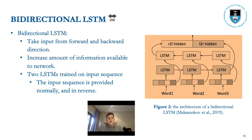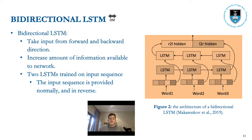The idea of a bidirectional recurrent neural network, or LSTM, involves duplicating the first recurrent layer in the network so that there are now two layers side by side, then providing the input sequence as-is to the first layer and providing a reverse copy of the input sequence to the second. The architecture of a bidirectional LSTM can be seen on the right of the slide. One hidden layer of LSTM receives the sequence of input in reverse, while the other does not. The outputs are then merged, usually using concatenation.